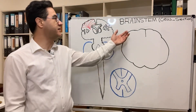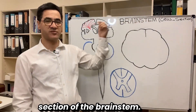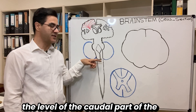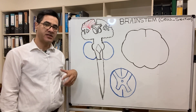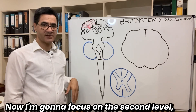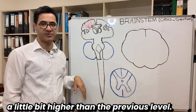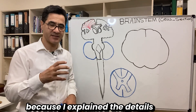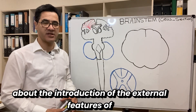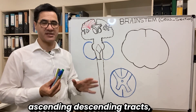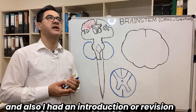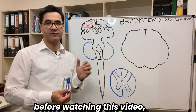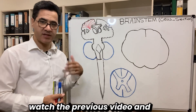Hi everybody. As you see here, I'm going to talk about the cross-section of the brain stem. In my previous video I showed you a cross-section at the level of the caudal part of the medulla oblongata. Now I'm going to focus on the second level, a little bit higher than the previous level. Please watch the previous video because I explained the details about the introduction of the external features of the brain stem, ascending and descending tracts, and also had an introduction about the nuclei. So please watch the previous video before watching this one.